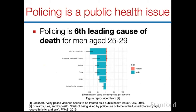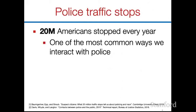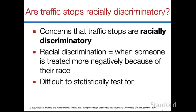Today I'm going to be talking about police traffic stops. Why do we care about them? They're one of the most common ways we interact with police — tens of millions of Americans are stopped every year. There's concern that traffic stops may be racially discriminatory. To be clear about what I mean by racial discrimination: this is when someone is treated more negatively because of their race — for example, someone is stopped by police because they're Black, when they wouldn't have been stopped had they been driving the same way in the same car but been white. This is obviously very bad if it's happening, but it's hard to statistically test for.